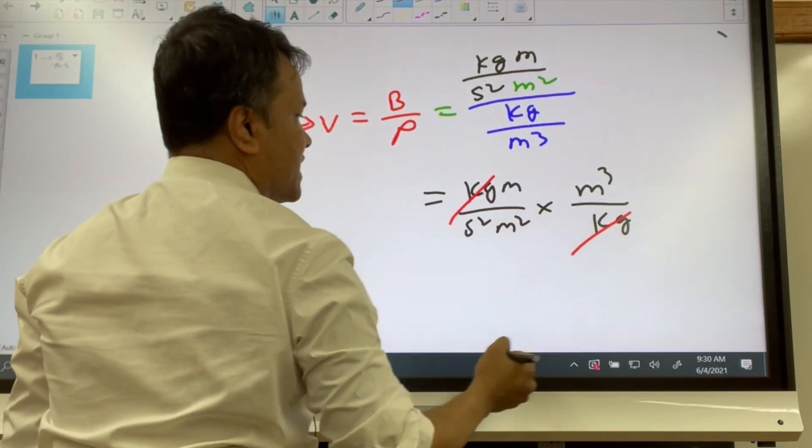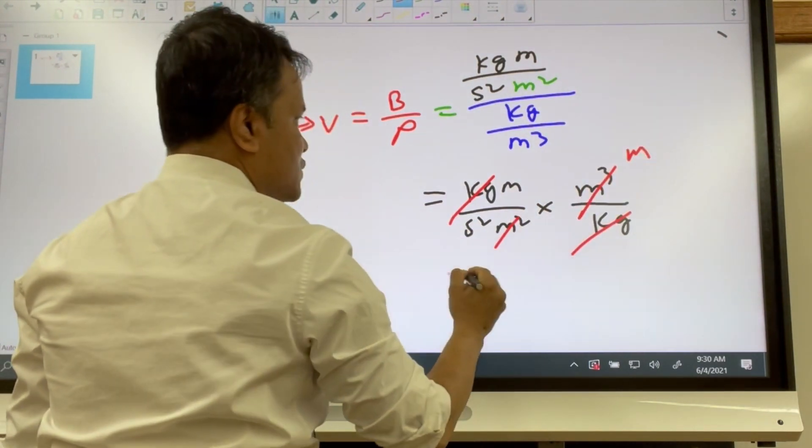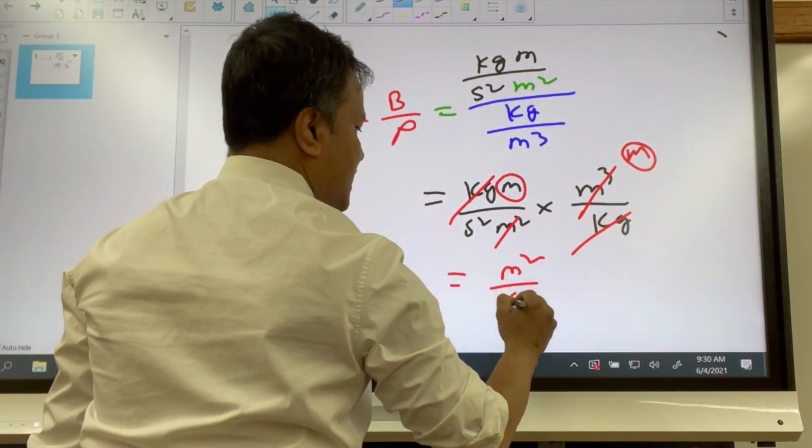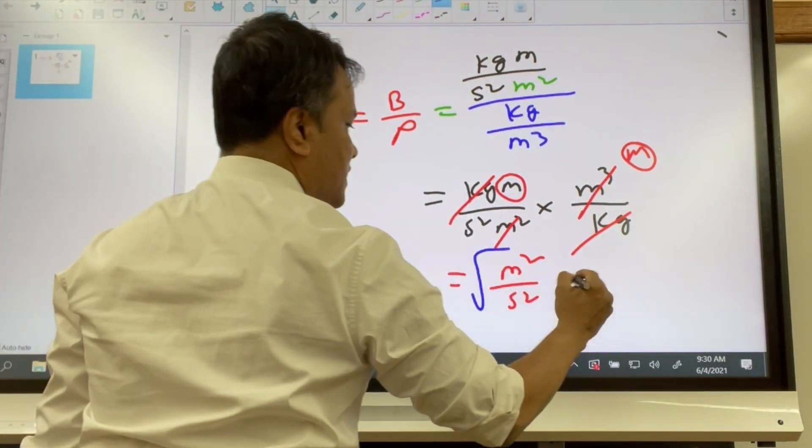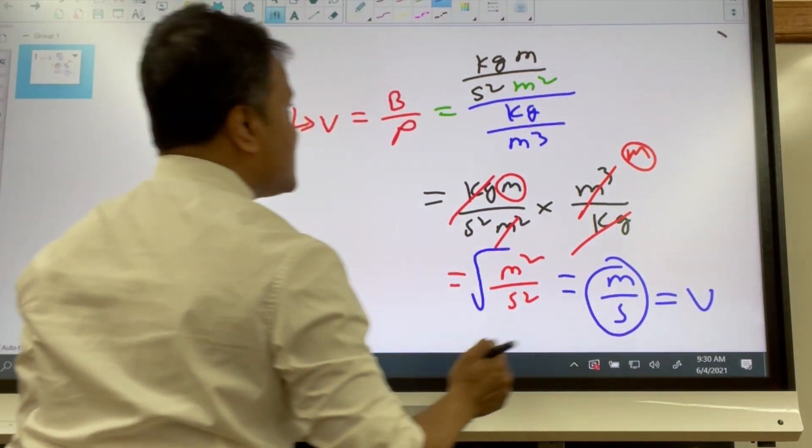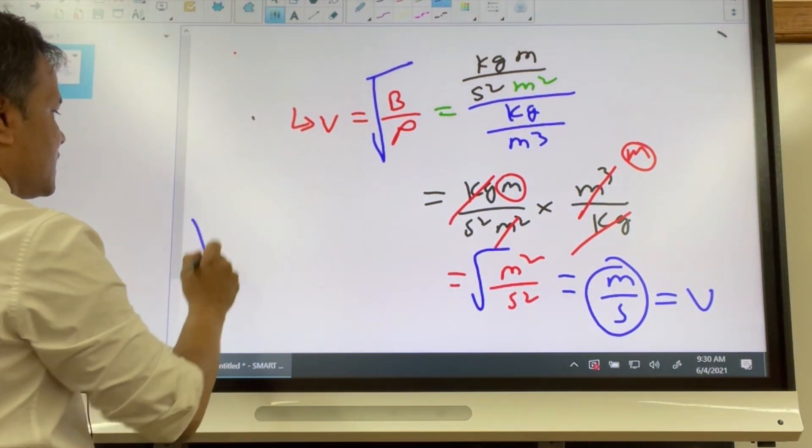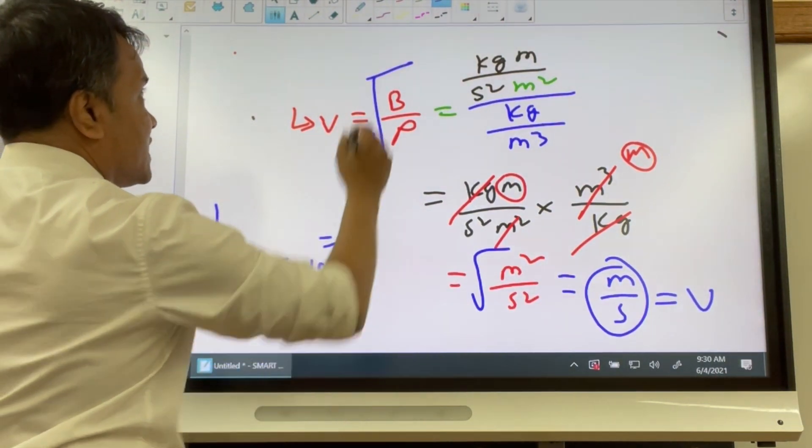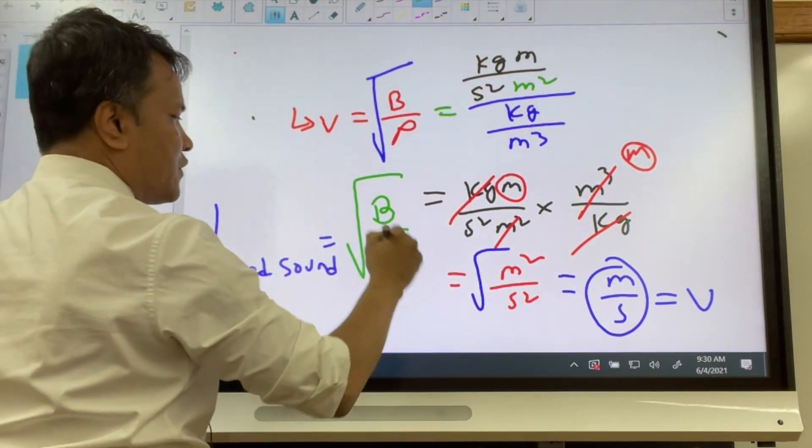You see kilogram and kilogram cancel. Meter squared, so it's meter times meter, meter squared. That's second squared. Then you take the square root, you get meter over second. That's the SI unit for velocity. So then you have to modify this equation. The velocity or speed of sound is indeed the square root of bulk modulus over rho.